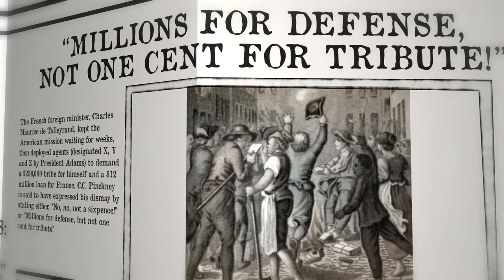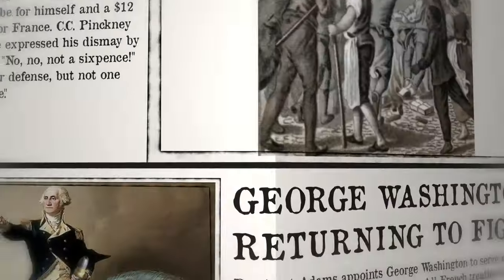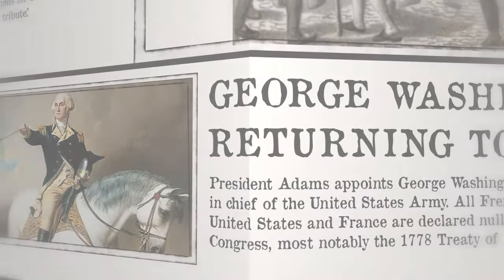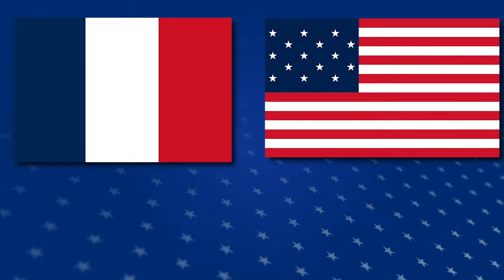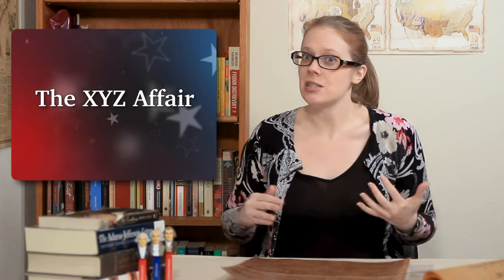Meaning they would rather spend millions fighting a war than pay the French bribe. Washington himself was even ready to come out of retirement to fight the French. Months later, the diplomats met again and were able to reach a peace agreement. Even though they didn't go to war, the XYZ affair still had a major impact on politics at home. Federalists began to see immigrants, especially those from France, as possible threats and spies leading a French invasion.